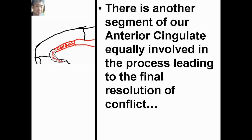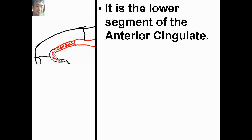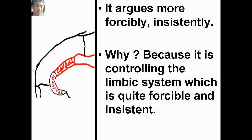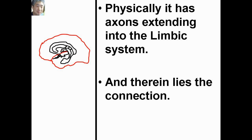There is another segment of our anterior cingulate equally involved in the process leading to the final resolution of conflict. It is the lower segment of the anterior cingulate. It serves as a control mechanism of the limbic system. It argues more forcefully and insistently, because it is controlling the limbic system, which is quite forceful and insistent. Physically, it has actions extending into the limbic system, and therein lies the connection.